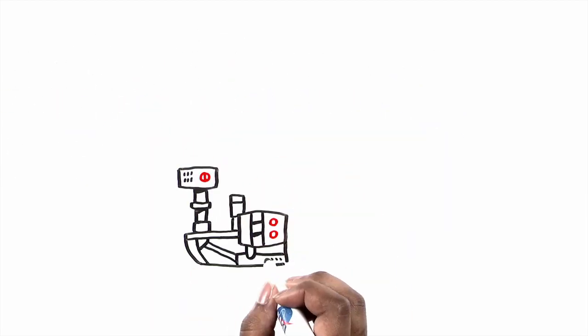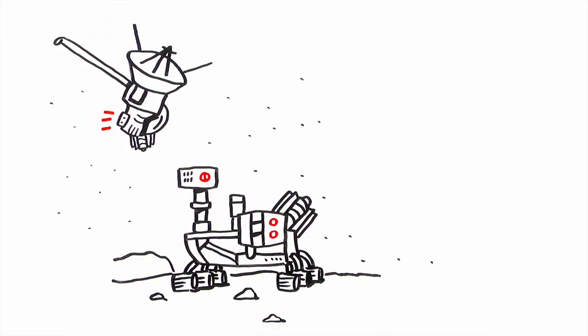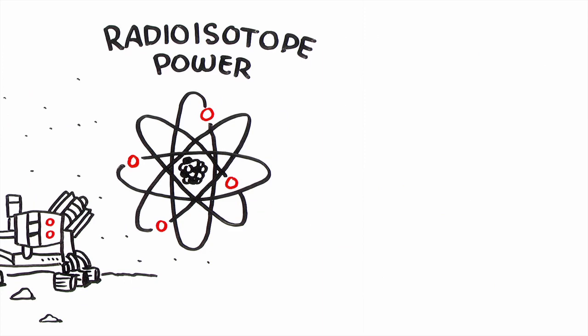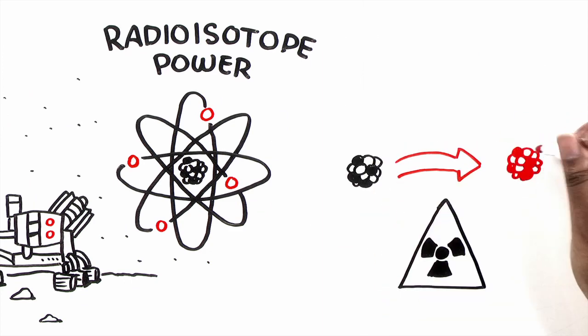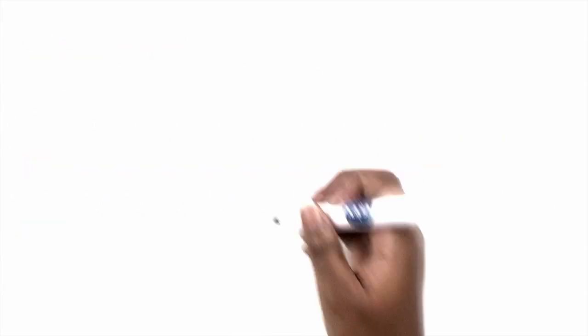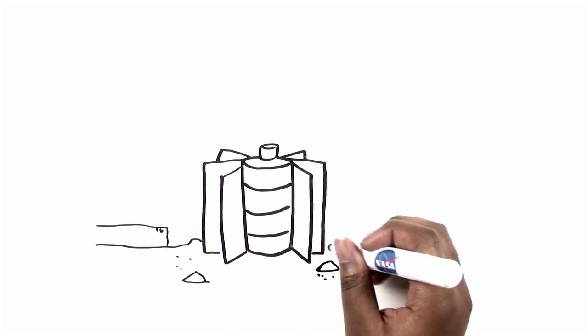That's why NASA's Curiosity rover on Mars and other NASA spacecraft that explore the solar system use something called radioisotope power. A radioactive substance releases heat as it breaks down or decays. A system that converts that heat into electricity is called a radioisotope power system.